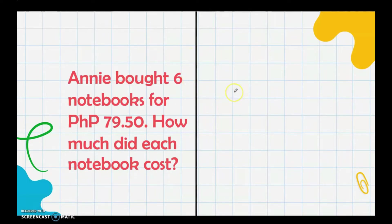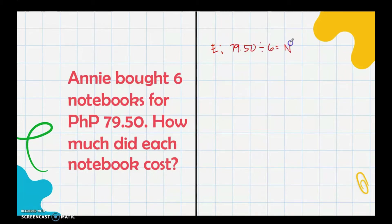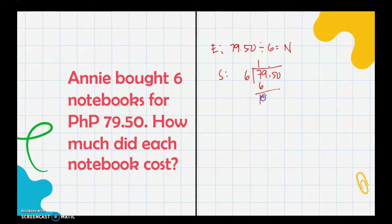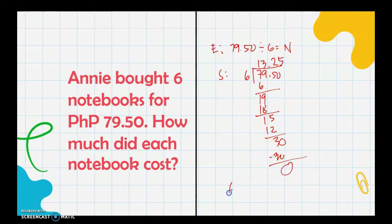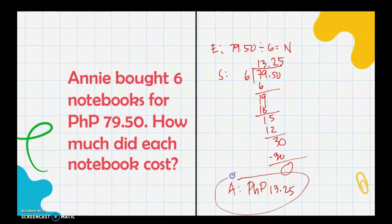Anna bought six notebooks for 79.50 — how much did each notebook cost? Our equation is: 79.50 ÷ 6 = n. Put the decimal point on top of the dividend's decimal point and divide: 79.50 ÷ 6 gives 13.25. Therefore, each notebook costs 13 pesos and 25 centavos.